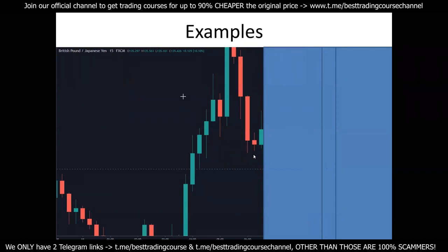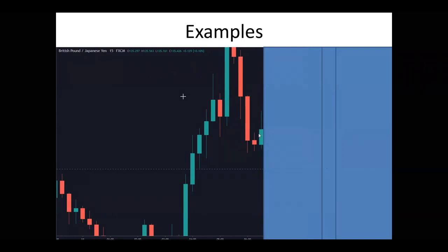So if the first bearish candle is your confirmation candle, now you ask yourself, okay, if I'm going to take a sell to target the low right over here, what's going to be my stop loss? Your stop is going to be, you're going to say, okay, I am anticipating this candle to continue down as long as it respects the high of the previous candle.